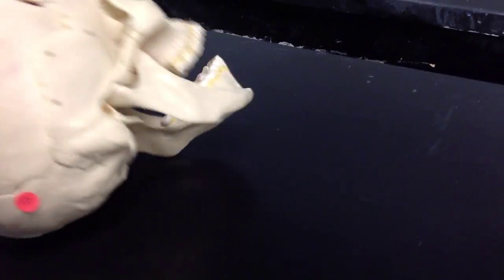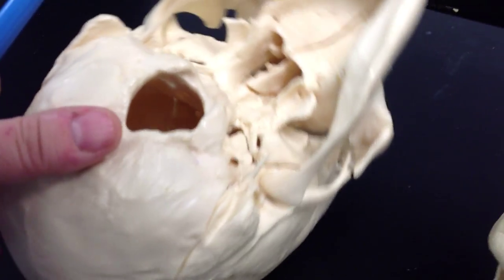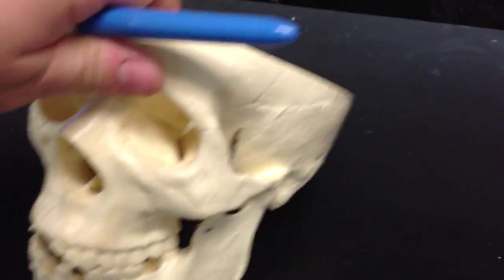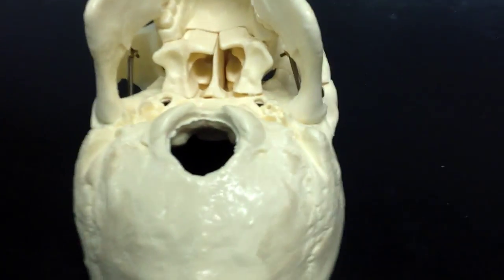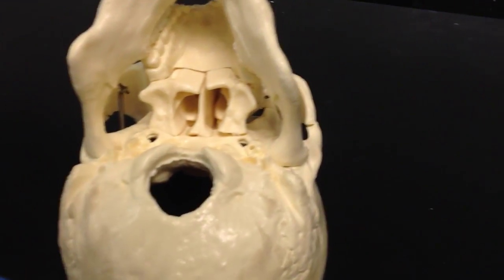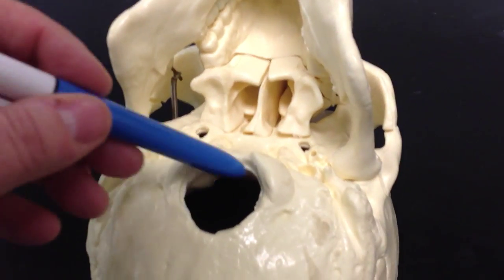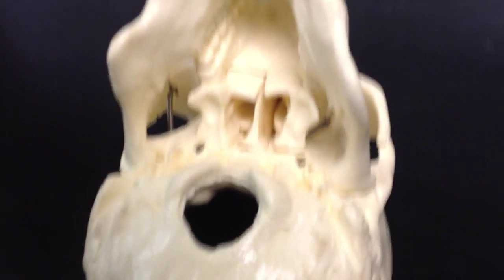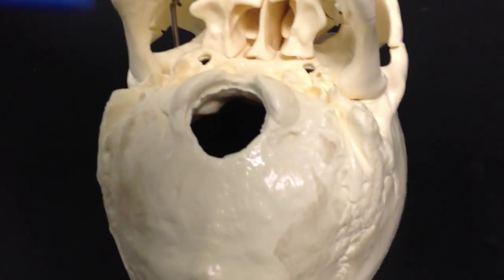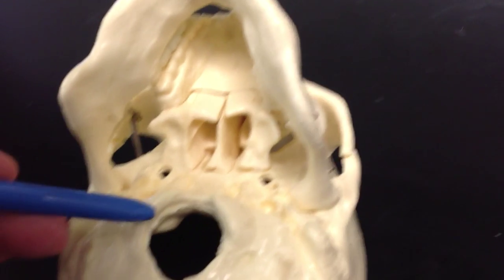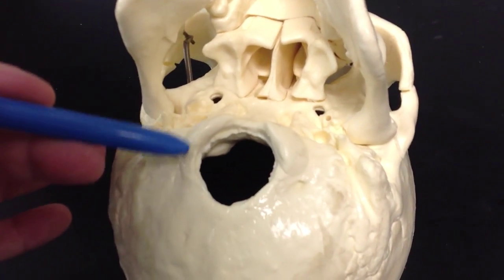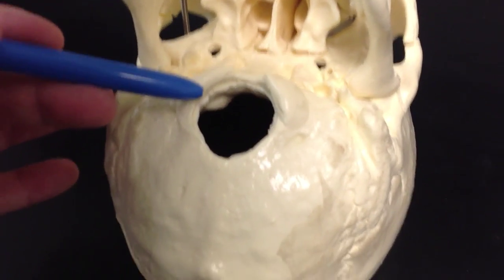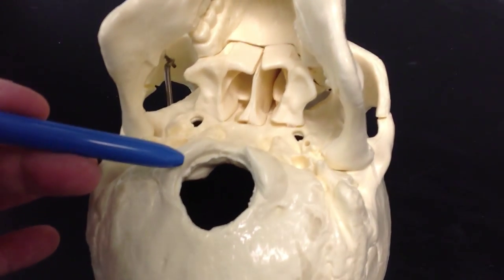We're going to just flip this skeleton right on over. When we flip the skeleton over, we'll notice that the large hole that we see, that's going to be the foramen magnum. It basically means large hole. On either side of the foramen magnum, we have the occipital condyles. Now, this right here is what rests on the atlas of the vertebrae that we discussed in a different video.